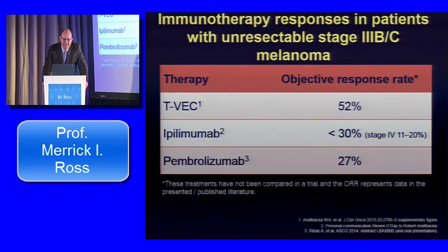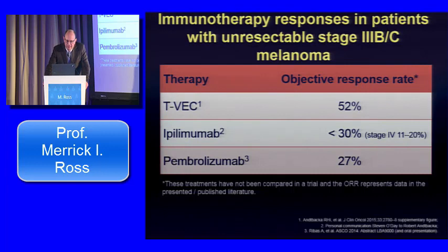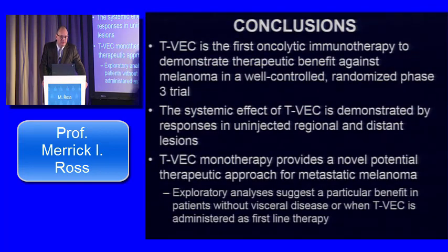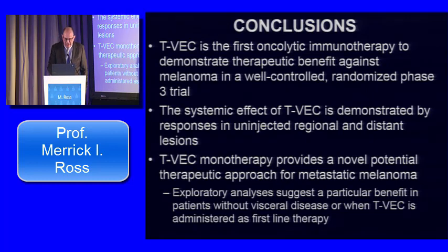Looking at TVEC in terms of objective response in this patient population: TVEC has a 52% response rate, ipilimumab is less than 30%, and PD-1 inhibitor data shows around 27%. TVEC compares very favorably to these novel therapies and is much better tolerated. TVEC is the first oncolytic immunotherapy to demonstrate therapeutic benefit against melanoma in a well-controlled randomized phase 3 trial. Its systemic effect is demonstrated by responses in uninjected regional and distant lesions, and the exploratory survival analysis suggests greatest benefit in frontline treatment and stage 3B, 3C, and stage 4M1A patients.